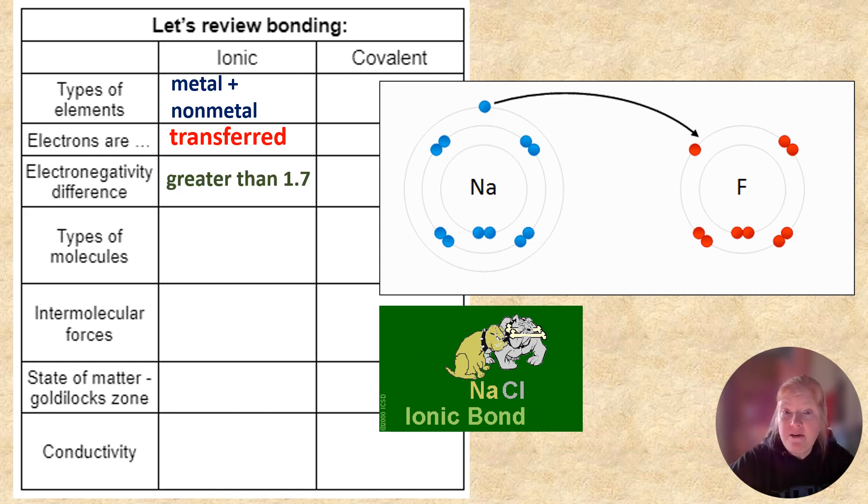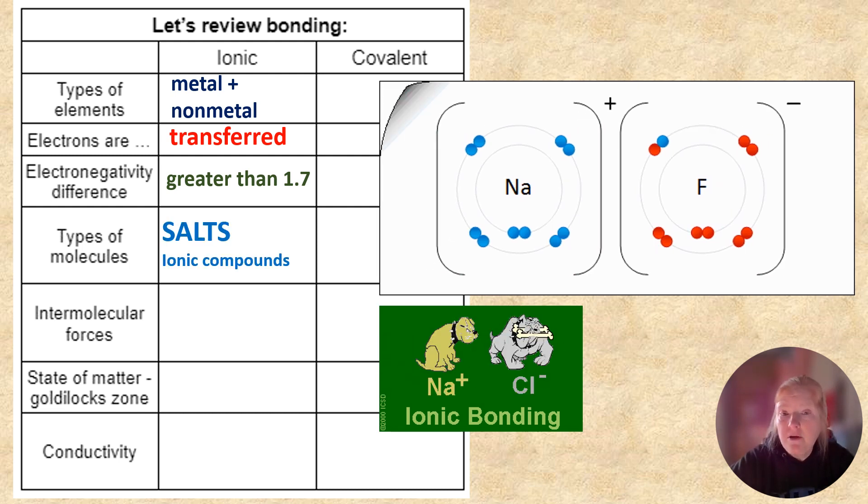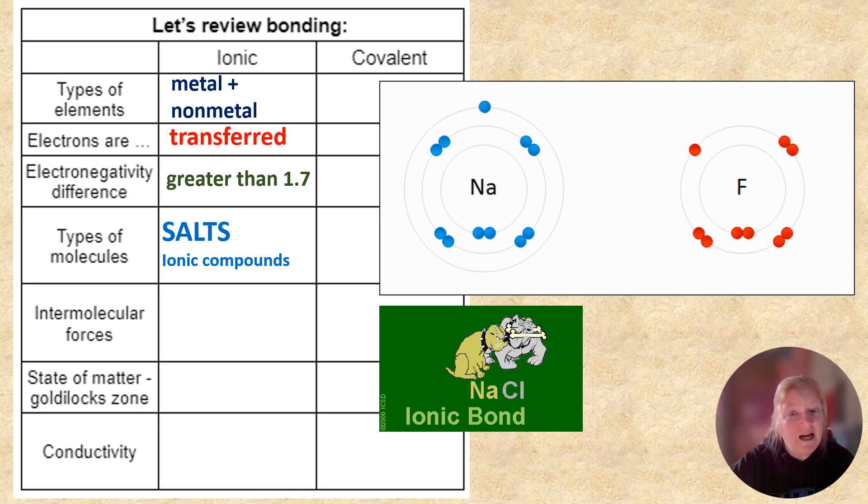The electronegativity difference is big, so typically that's bigger than 1.7. What are these types of molecules? Well, they're salts or ionic compounds.